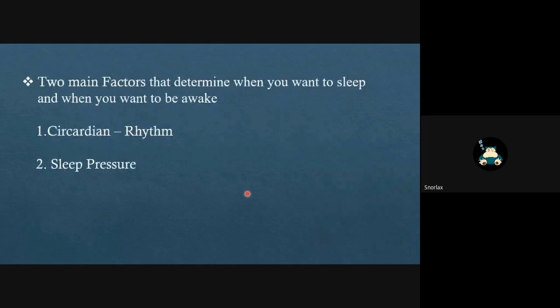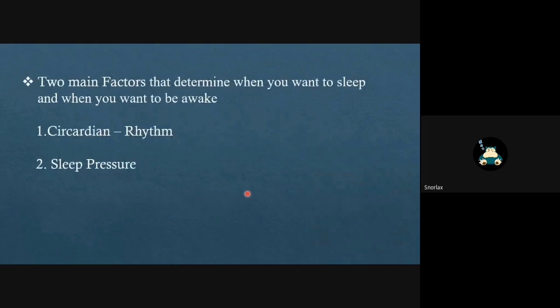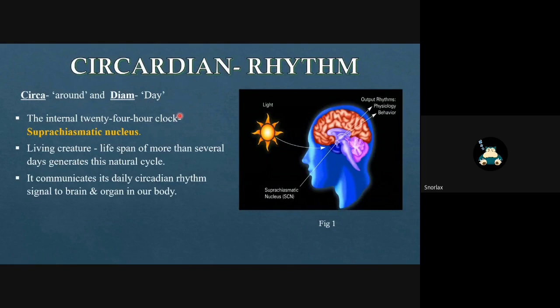So how does your body know when it's time to sleep? There are two main factors that determine when you want to sleep or be awake: circadian rhythm and sleep pressure. Circa means around and diem means day. It's fascinating that everybody knows when it's time to sleep, drink, or eat. There's an internal 24-hour clock present inside the brain called the suprachiasmatic nucleus. Every living creature having a lifespan of more than several days generates this natural cycle. This SCN communicates its daily circadian signal to brain and organs in our body, and light is the primary cue that triggers the signal.